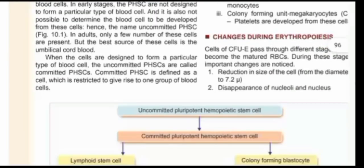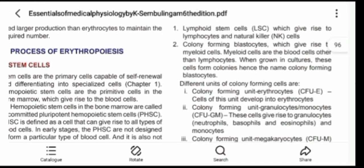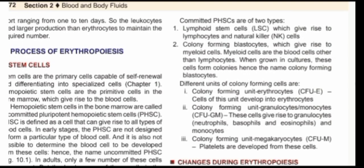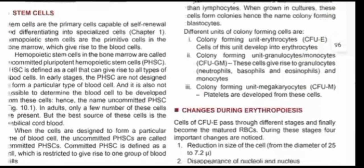We also have the committed polypotent hemopoietic stem cells, which are committed to producing a specific type or class of blood cells. These include the lymphoid stem cells that give rise to lymphocytes and natural killer cells. The natural killer cells help to function as antigen-presenting cells. Then you also have the colony-forming units — the colony-forming unit erythrocyte (CFU-E), colony-forming unit granulocytes/monocytes (CFU-GM), and colony-forming unit megakaryocytes, which give rise to platelets.